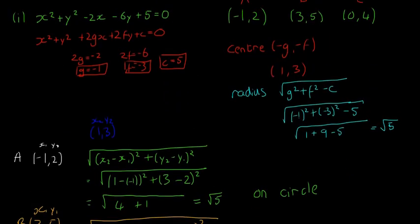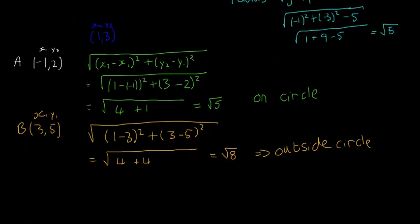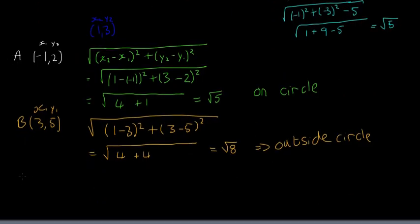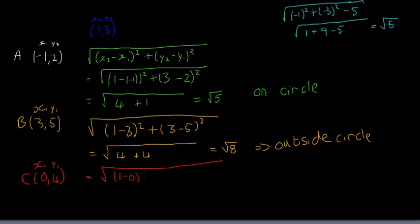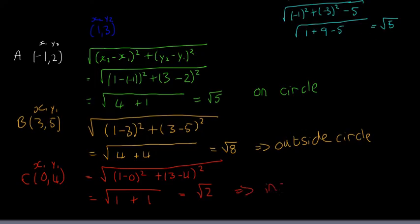For point C = (0, 4), we put it into the distance formula: square root of (1 − 0) squared plus (3 − 4) squared. That gives 1 plus 1, so the square root of 2, which is smaller than the radius √5. That means point C is inside the circle.